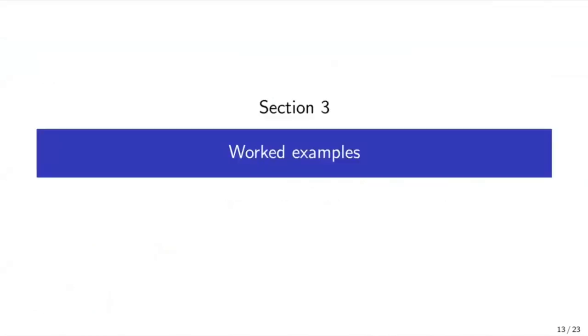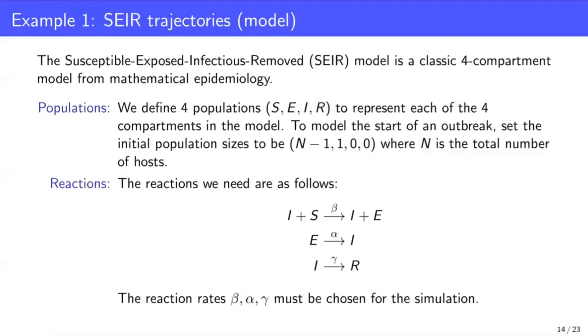Okay, so that's all in terms of background. For the worked examples, we're going to just look at two examples of applying Remaster to the simulation of different kinds of models. Firstly, I'll look at a model that is common in epidemiology, namely the susceptible, exposed, infectious, and removed model, which is a classic four-compartment model.